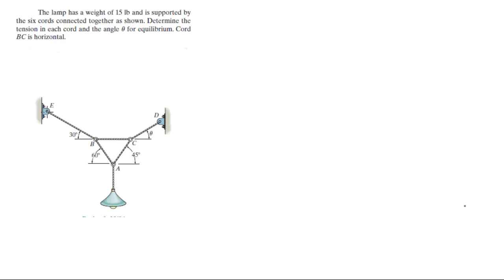For more videos visit ForTheSakeOfEducation.com. Alright guys, let's do this problem that says the lamp has a weight of 15 pounds and is supported by 6 cords connected as shown. Find the tension in each cord and the angle theta for equilibrium.